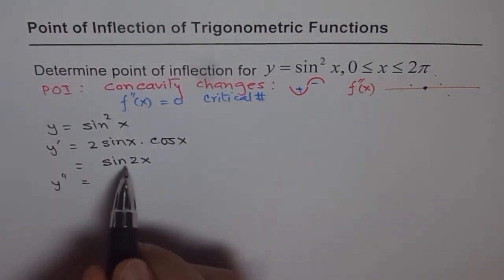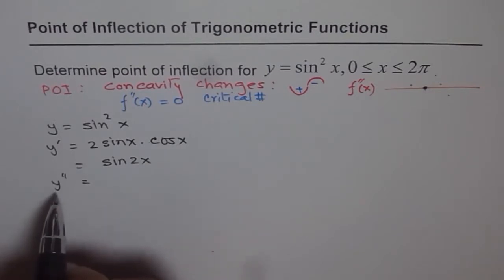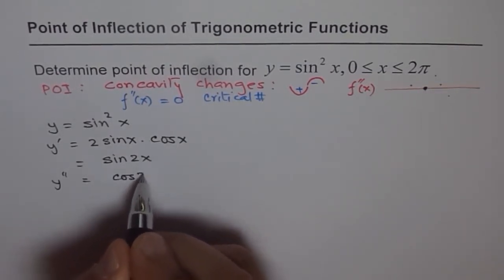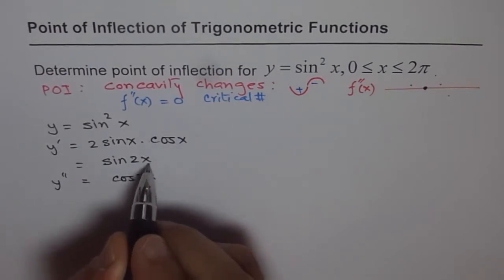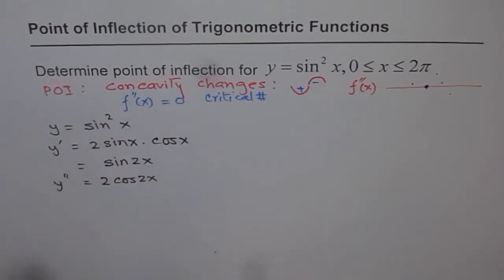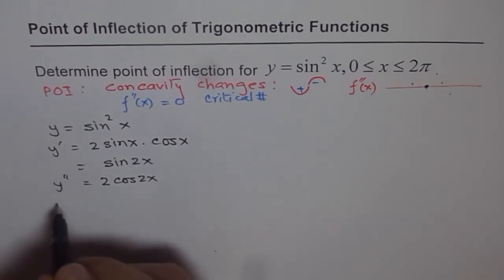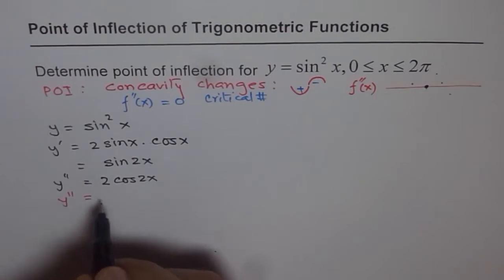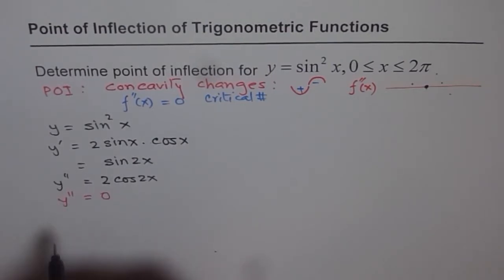The derivative of sin 2x — we are now finding the second derivative — is cos 2x times the derivative of 2x, which is 2. So we get y'' equals 2 cos 2x. To find the point of inflection, we set the second derivative equal to zero: y'' = 0.